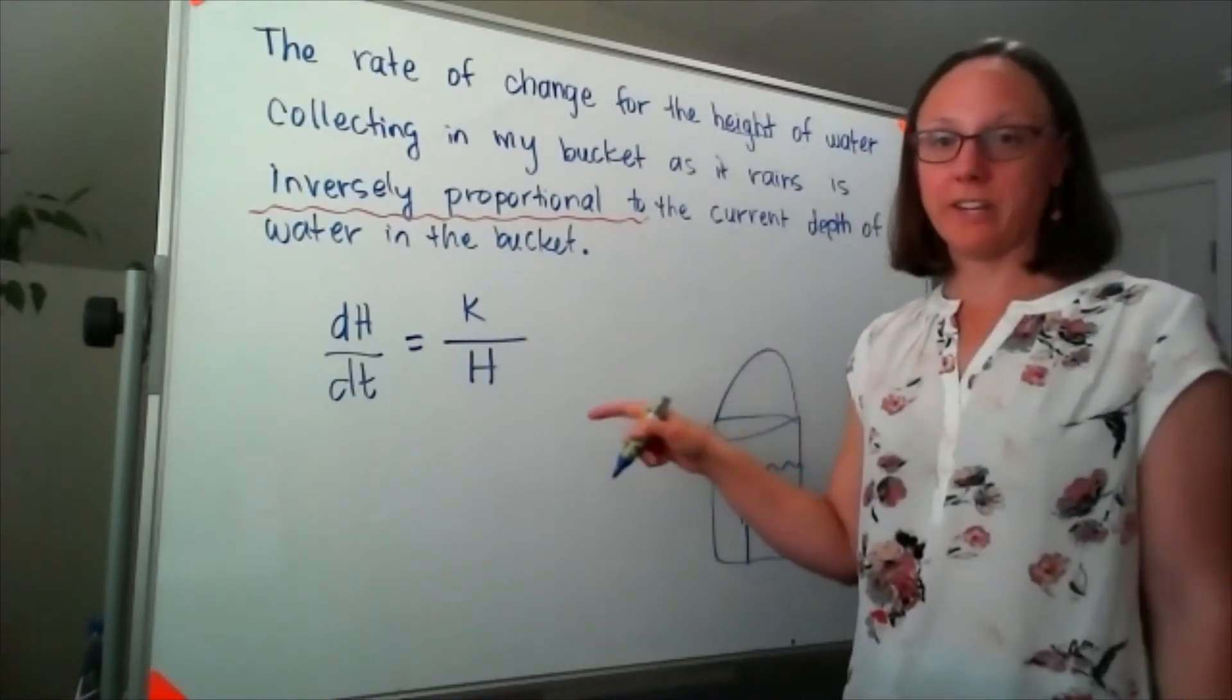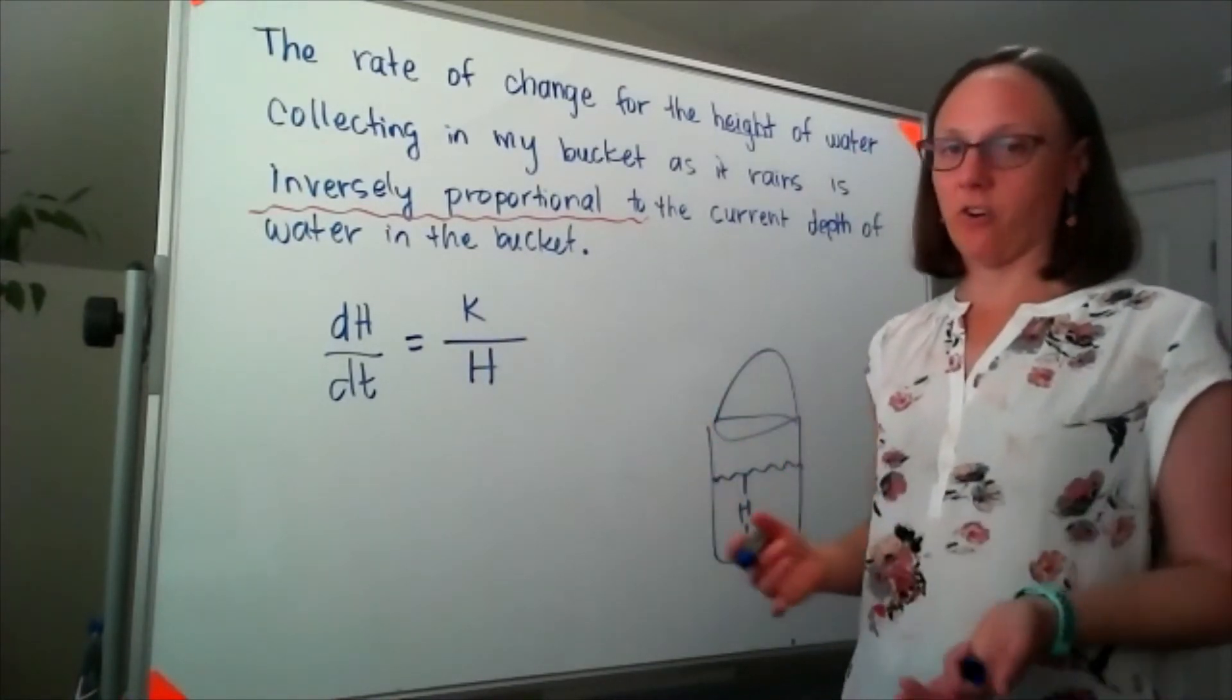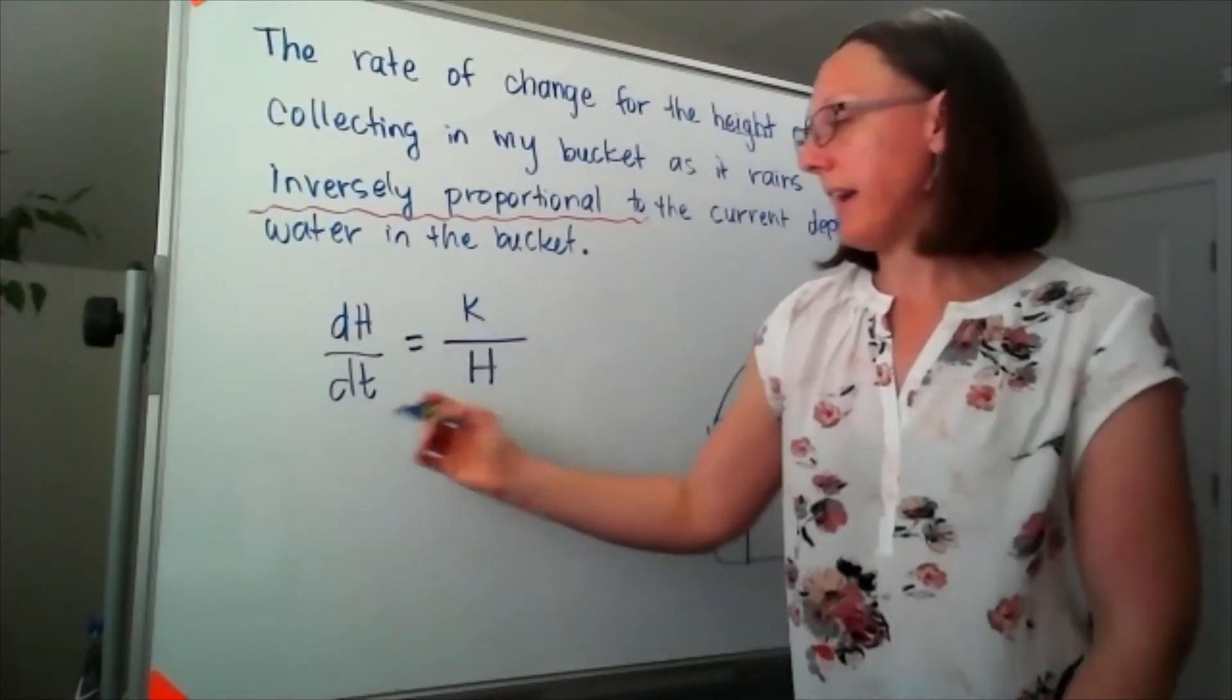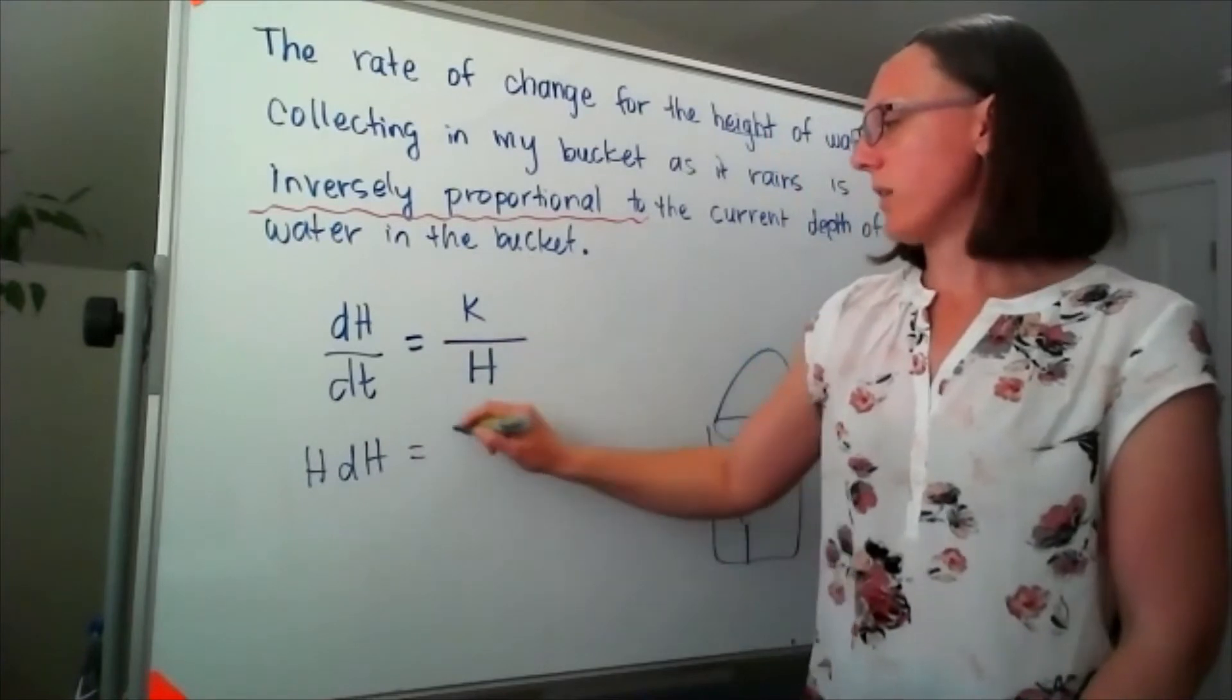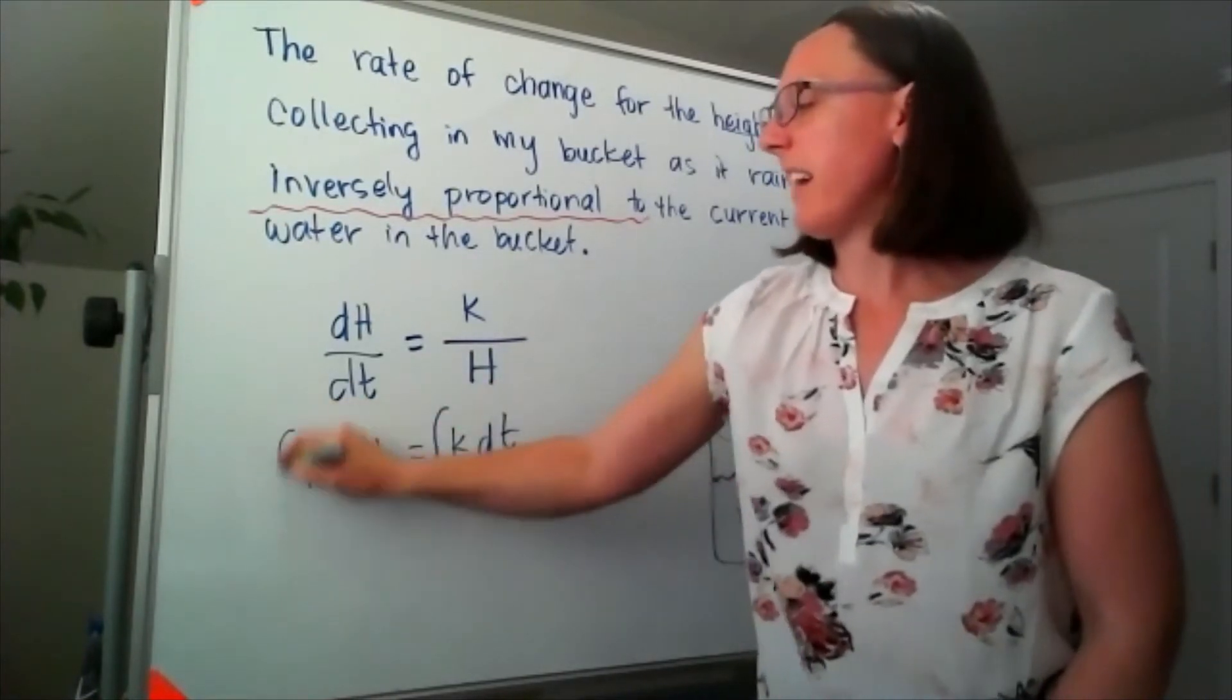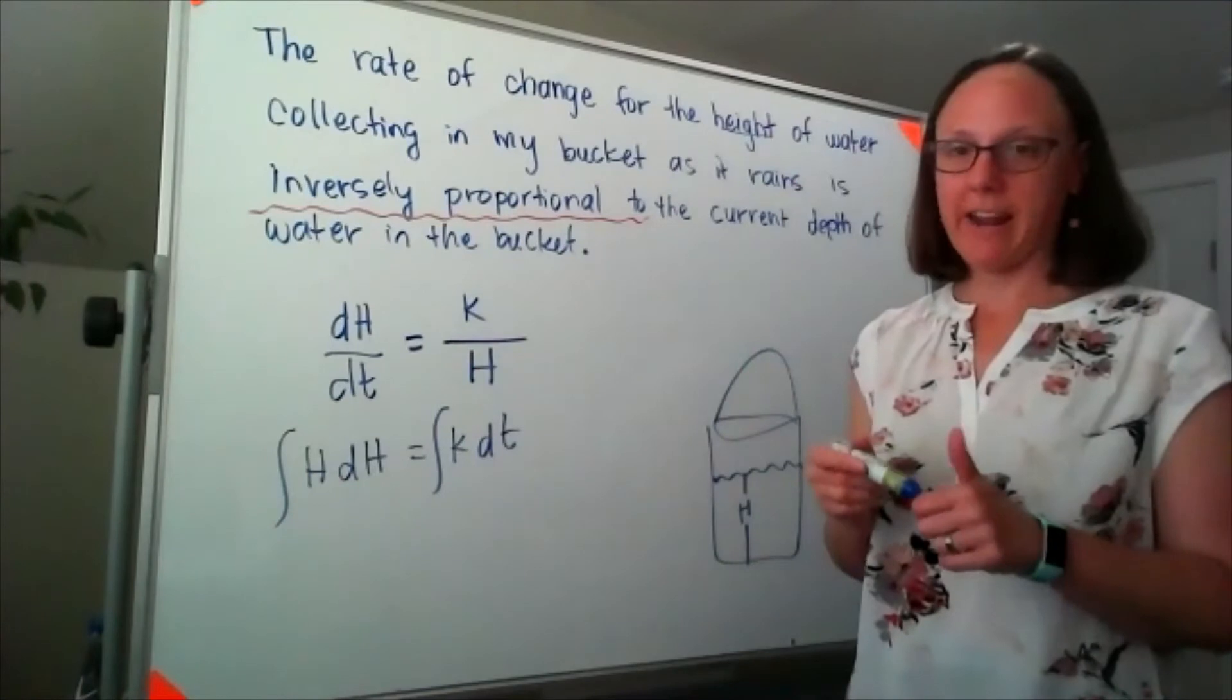This is now a differential equation that we can separate and integrate. I can multiply by h over here to have h dh equals k dt, and then we can integrate both sides and solve for h.